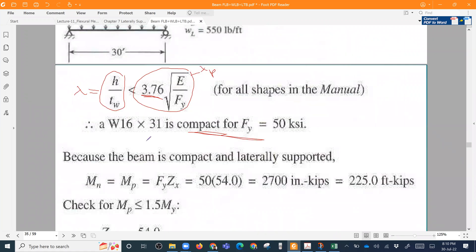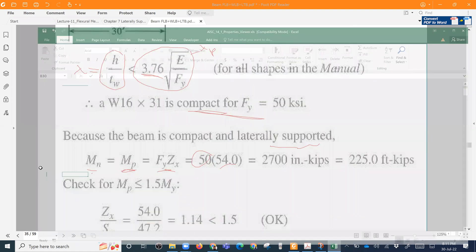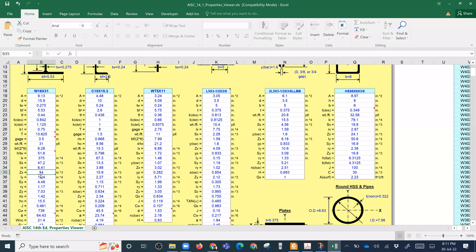Flange compact, web compact, that means the section is compact. So the beam is compact. Now for the compact beam laterally supported, we know that the moment capacity formula Mn equals to Mp, the plastic moment equals to Mp equals to Fy times Zx. So Fy is 50 and Zx is 54 from the section properties.